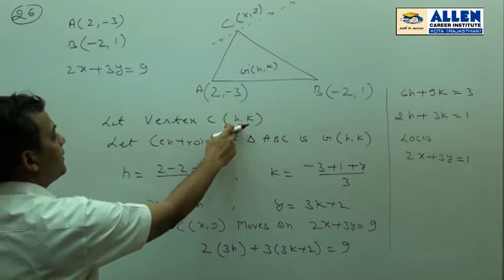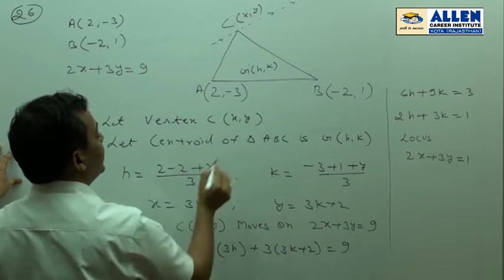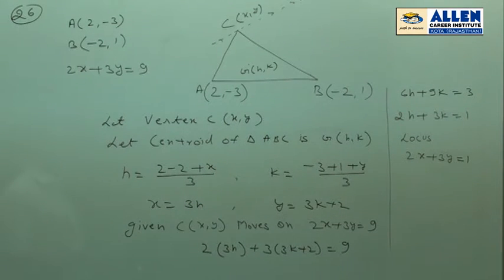So, let vertex C be (x, y) and let the centroid of the triangle be G (h, k).